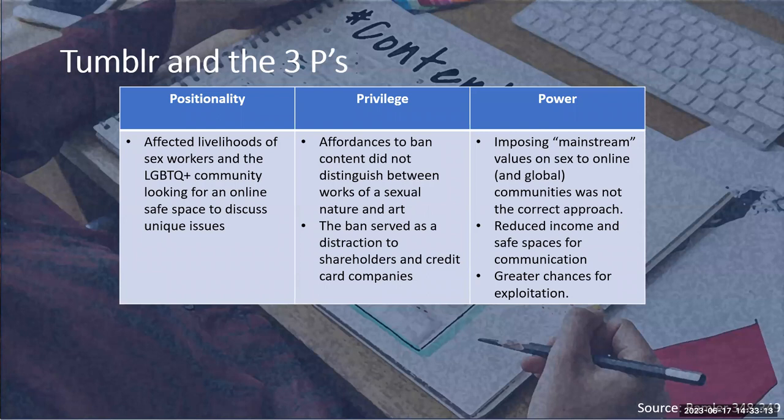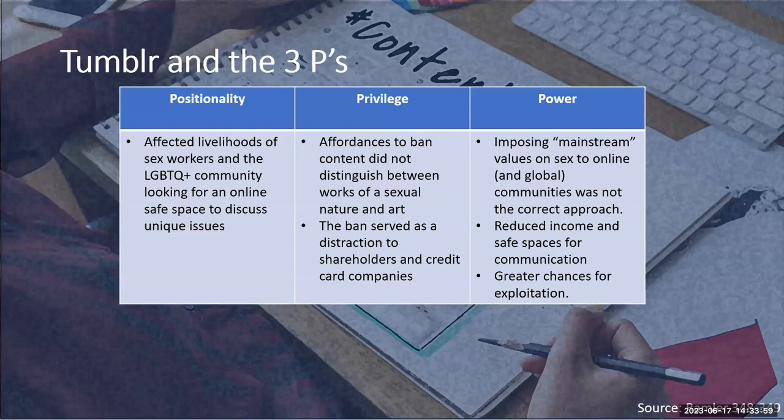Applying the three P's to this case: in positionality, the ban affected the livelihoods of sex workers and the LGBTQ+ community that was looking for an online safe space. In privilege, the decision to ban content did not distinguish between works of a sexual nature and art — there was no discussion between what is considered artistic, erotic, or titillating — and in a sense the ban served as a distraction to shareholders and credit card companies. In power, imposing mainstream values on sex onto online and global communities, which have different values especially regarding sex, gender, and identity, was not the correct approach. It reduced income and safe spaces for online communication, creating chances for exploitation of these marginalized communities.